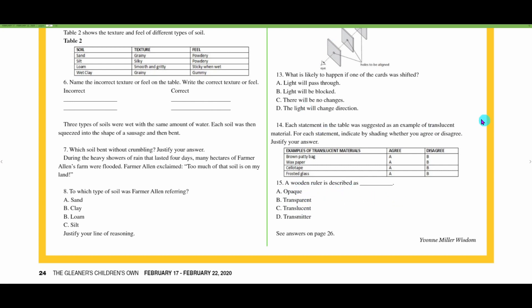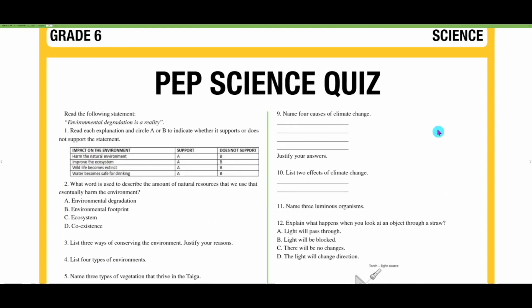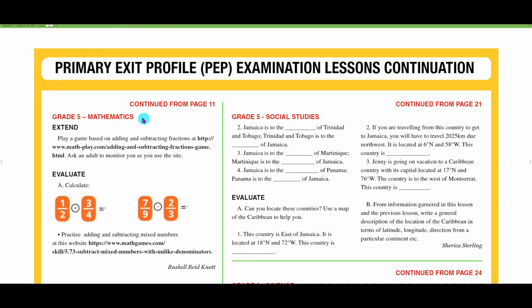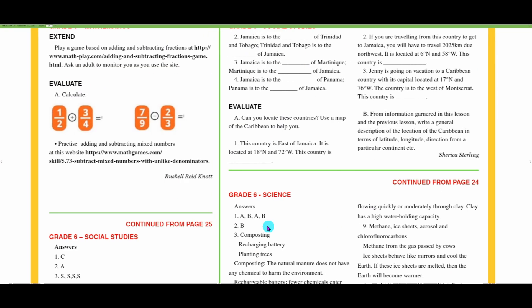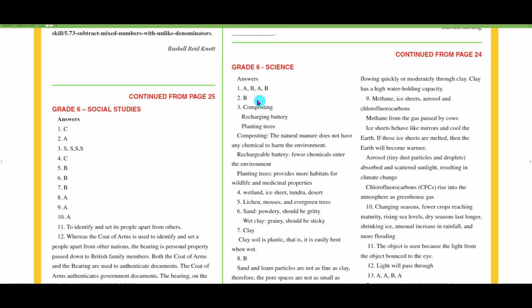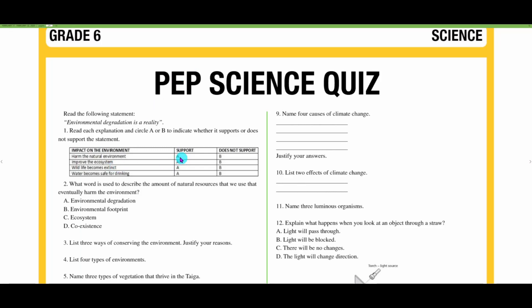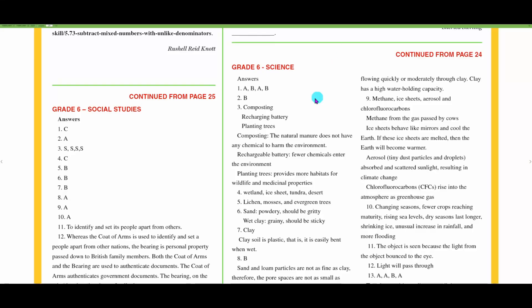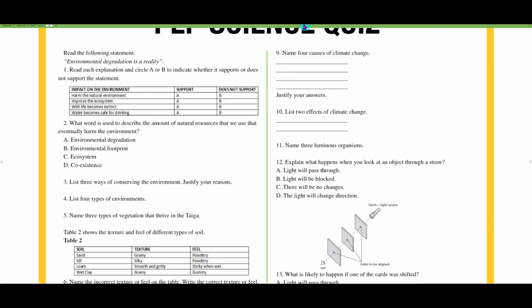Let's go to the answers now and see if what we have lines up with the answers. For science number one, it's A, B, A, B. So A supported, B not supported, A supported yes wildlife would become extinct, and B yes. So we got those. Number two, B environmental footprint, yes we got that.